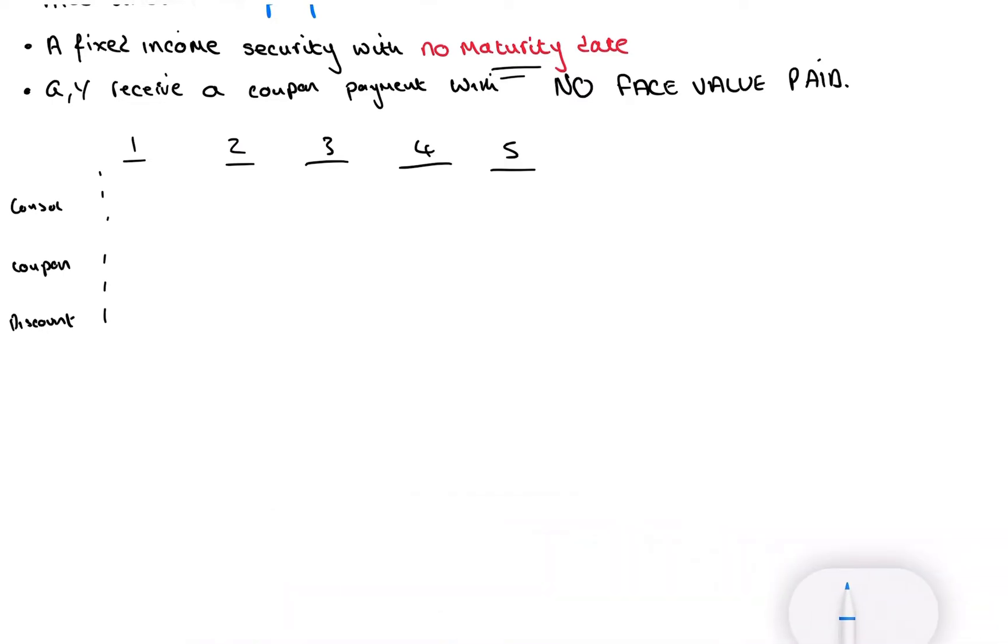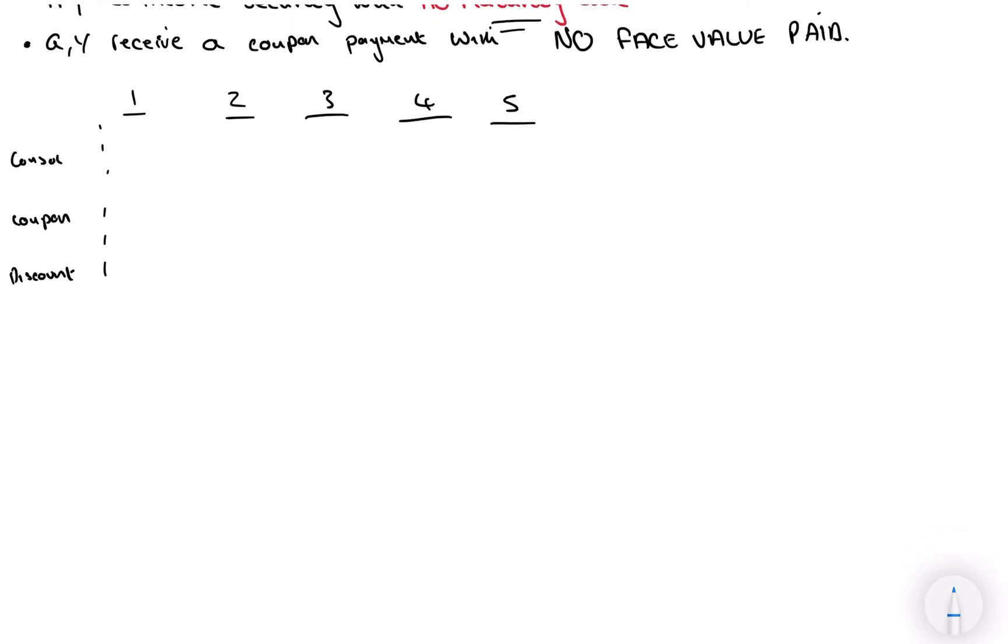So let's start with blue and let's start with a coupon bond. So with a coupon bond, as we already know, if you've seen the video, we just constantly receive coupon payments every single year. Up until maturity, where we get the coupon and the face value.